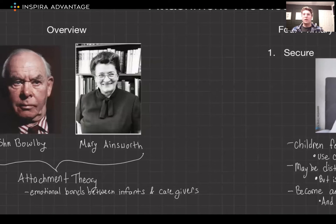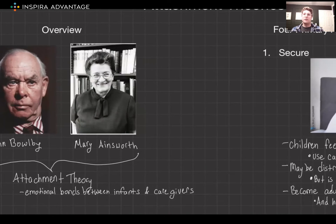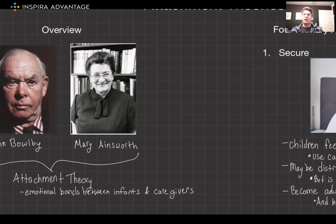Let's start with where did this theory come from. Attachment theory is rooted in the work of John Bowlby and was expanded by Mary Ainsworth. It examines the emotional bonds formed between infants and caregivers. Bowlby's four stages of attachment provide a framework for understanding these bonds: pre-attachment, attachment in the making, clear-cut attachment, and formation of reciprocal relationships.